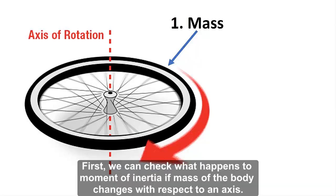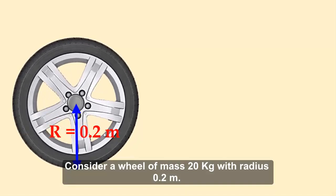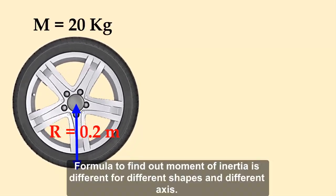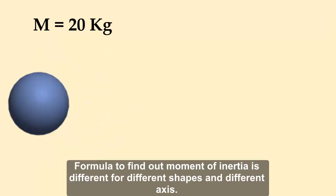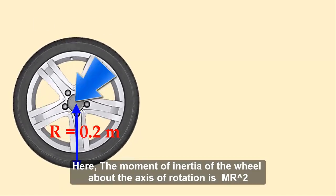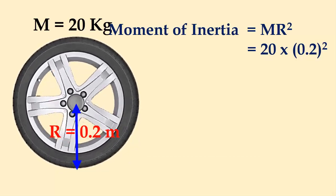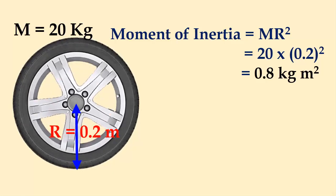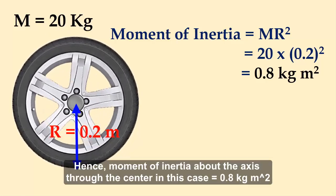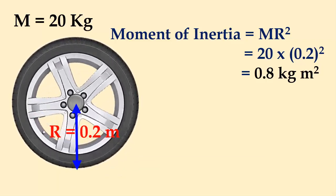First, let us check what happens to the moment of inertia if the mass of the body changes with respect to an axis. Consider a wheel of mass 20 kg with radius 0.2 m. The formula to find the moment of inertia is different for different shapes and different axes. Here, the moment of inertia of the wheel about the axis of rotation is mr², which is equal to 20 × 0.2², which equals 0.8 kg·m². Hence, the moment of inertia about an axis through the center in this case is 0.8 kg·m².